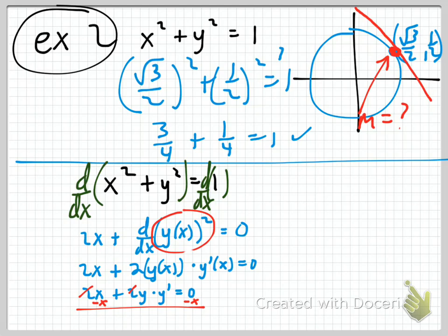If we divide both sides by 2 and subtract x from both sides, we get y times y prime equals negative x, and therefore y prime equals negative x over y.